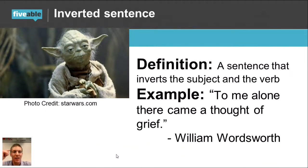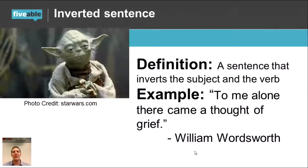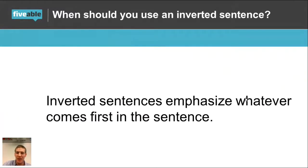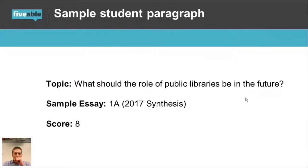Yoda is who I think of when I think of inverted sentences, because he always inverts his sentences. An inverted sentence inverts the subject and the verb. Example from William Wordsworth: 'To me alone, there came a thought of grief.' The normal sentence would be 'There came a thought of grief to me alone.' Why would I do this? You are clearly emphasizing whatever comes first. Wordsworth was emphasizing 'to me alone.' If you want to do that at any time in your essay, absolutely do it — but don't try to sound fancy. Only invert a sentence if you want to emphasize something very purposefully.